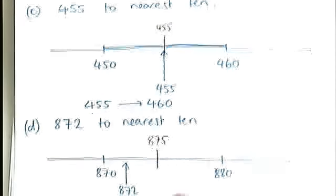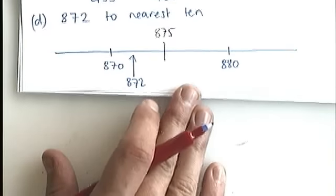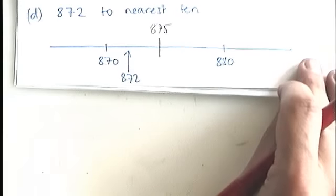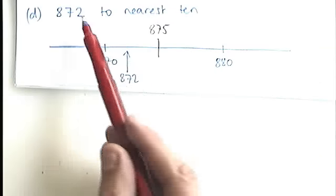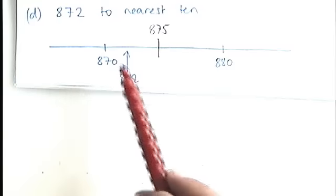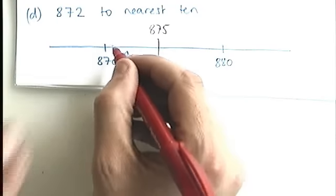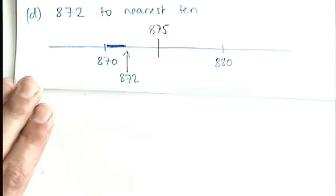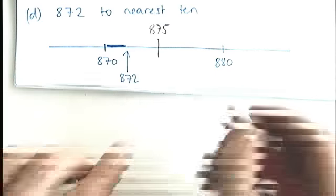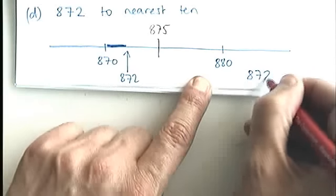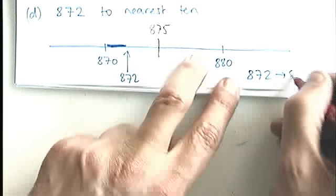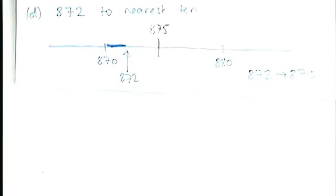And last of all, it's question D. Hopefully you can see that 872 rounded to the nearest ten is going to be closer to 870. That distance there is less. So this is an example where we would round downwards. 872 rounds to 870 to the nearest ten.